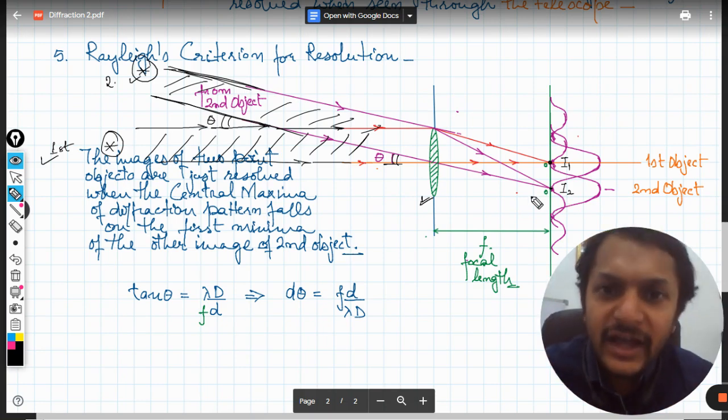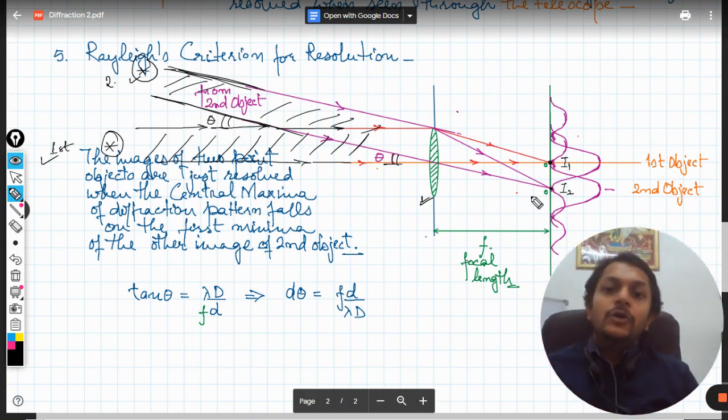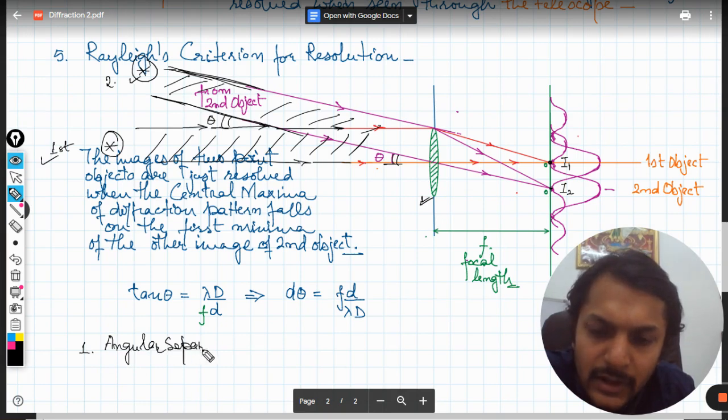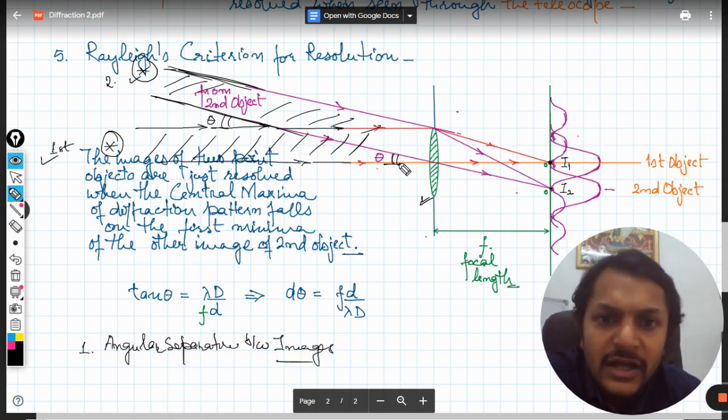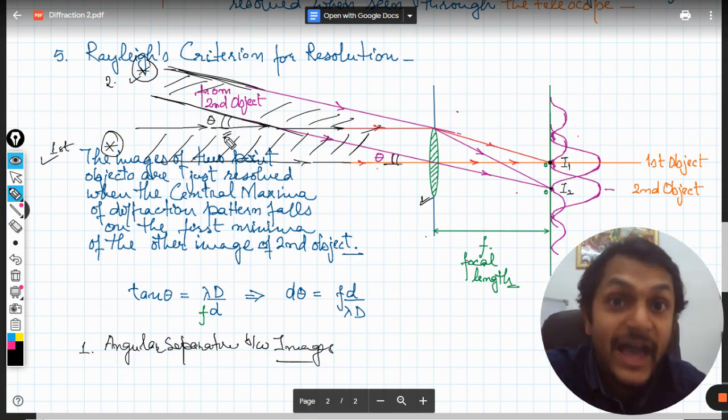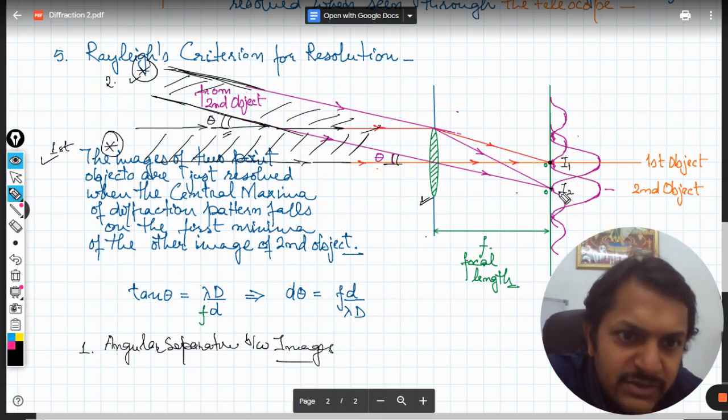Now the first question that we need to address is the angular separation, angular separation between images. Now where is that angle here? This angle is basically this angle. So this is the angular separation between two stars, the actual angular separation. Now this is image one, this is image two. So what is the angle between these two? This is the angle between the images.